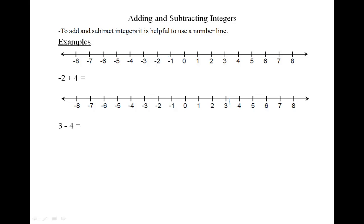Start at the first integer and move the number of spaces indicated by the next integer in the expression. If the next integer is positive, move that many spaces to the right. If the next integer is negative, move that many spaces to the left. Here is a number line. Positive numbers are to the right of the zero, and negative numbers are to the left of the zero.